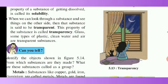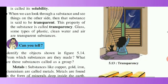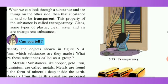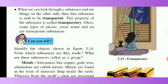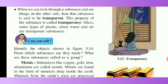When we can look through a substance and see things on the other side, the substance is said to be transparent. This property of the substance is called transparency. Glass, some types of plastic, clean water, and air are called transparent substances. When we look at a substance and can see the other side, it is known as transparent.